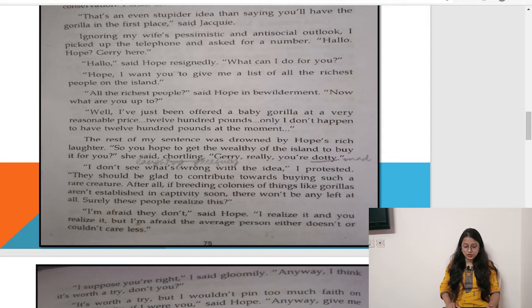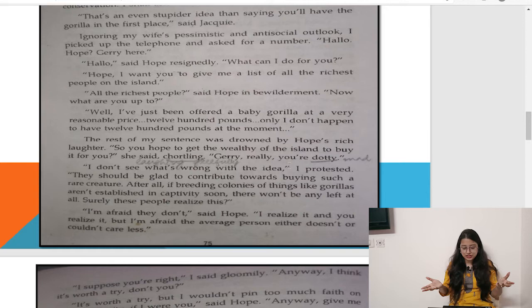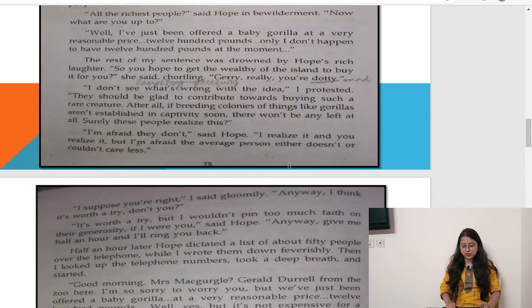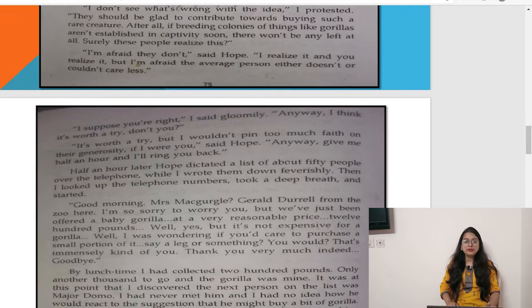Dural argued that these rich people should be glad to contribute towards buying such a rare creature — after all, if breeding colonies of gorillas aren't established in captivity soon there won't be any left at all. But Hope said, 'Jerry, you are dotty. I don't think anybody is going to give you any money.' Dural kept explaining that this is a responsibility and we should protect endangered species, but Hope replied: 'I am afraid the average person either doesn't know or couldn't care less.'